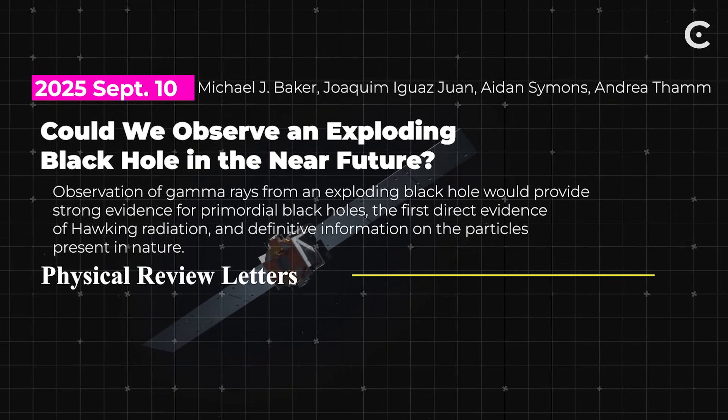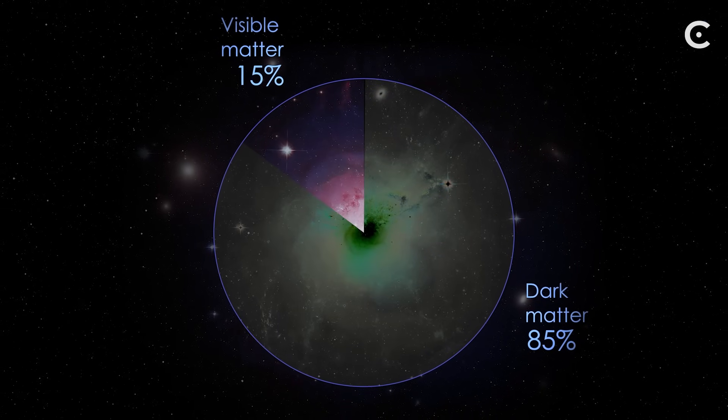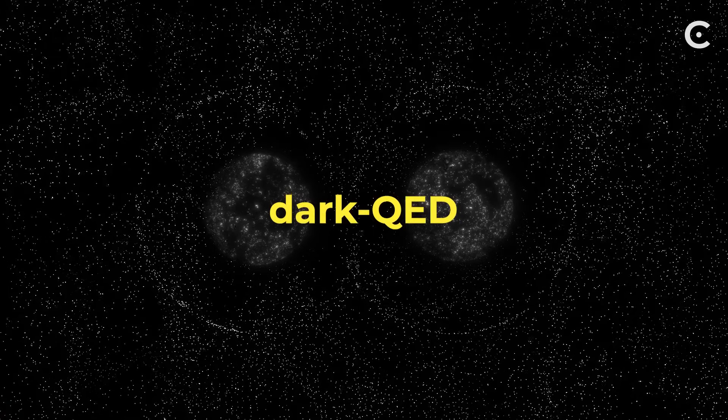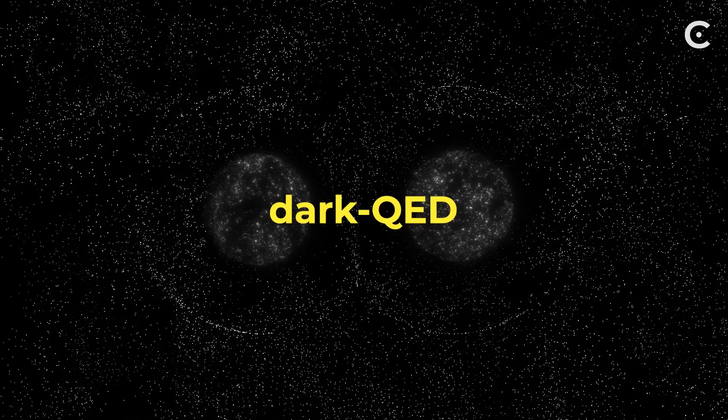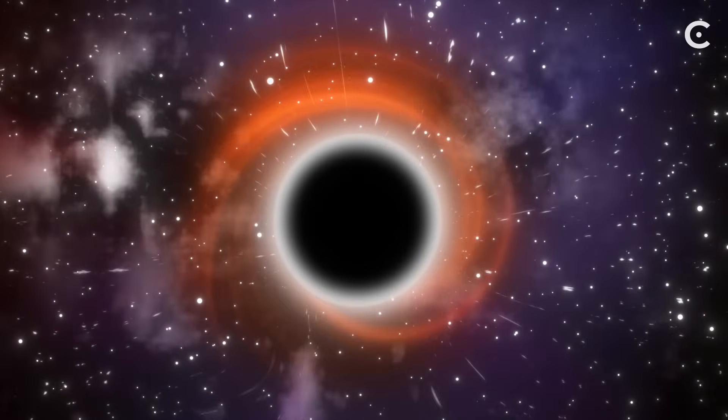They asked, what if we're missing a piece of dark matter physics? Dark matter makes up about 85% of all matter, but we don't know what it is. The team proposed a dark QED model, a hidden version of electromagnetism with its own dark electrons and dark photons.